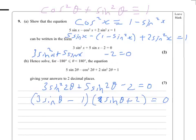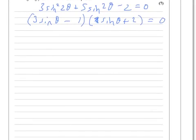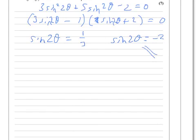Let's make a bit of space here. From here we know that this should be 2 theta. So we know that sine 2 theta equals 1 third, or sine 2 theta equals minus 2. Now that has no solutions because sine can never be anything outside the range minus 1 to plus 1, so we can ignore that.